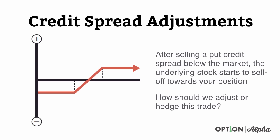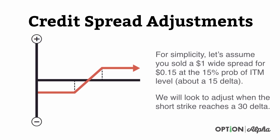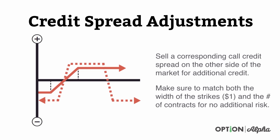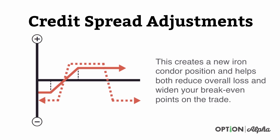Now after selling a put credit spread below the market, if the stock were to fall down against your put credit spread side — assuming we sold the same type of $1 wide spread — we would again look to adjust it if the put side reached a 30 delta. In this case, instead of selling the corresponding put spread, since we already have a put spread, we would sell the corresponding call spread side. We leave the put spread side completely alone and go back in and resell a brand new credit call spread, creating an iron condor. As long as we keep the number of contracts the same and the width of the strike the same, we're doing this for no additional risk. This creates wider breakeven points, reduces risk, and gives us a better opportunity to make some money.